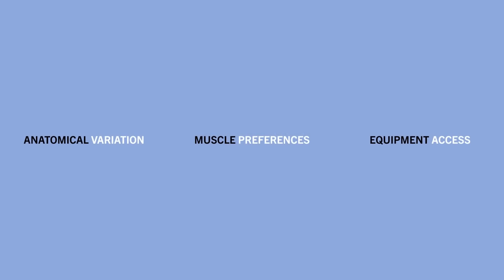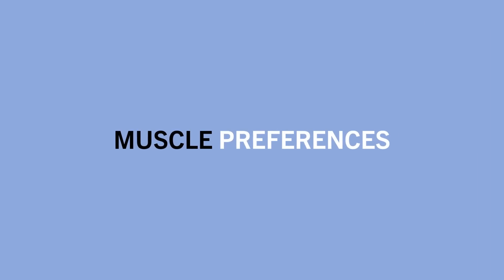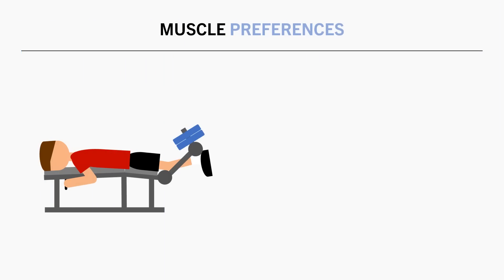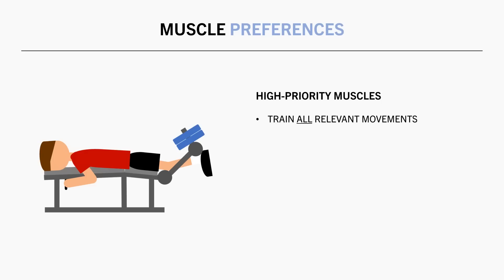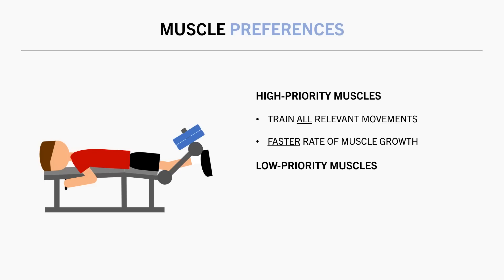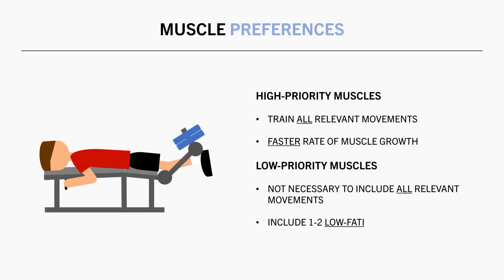Another way in which these recommendations should be individualized is via our personal preferences — specifically, which muscles we want to emphasize over others. This is based on what muscles are naturally more or less developed relative to the rest of your physique. For lagging muscles, or those you want to maximize development of, it is a good idea to ensure we are training the muscles in all primary movement patterns, which will ensure we are training all regions of the muscle and hitting it via all relevant movement patterns — theoretically resulting in a faster rate of muscle growth. For muscles you may not be currently trying to maximize, you might just want to include one or two movements to save time and energy for other muscles you are prioritizing, which will likely result in a slower rate of growth.